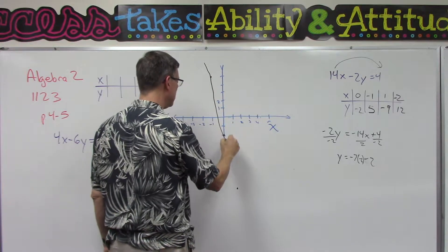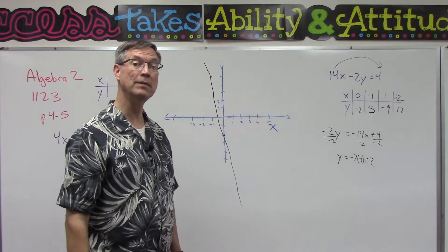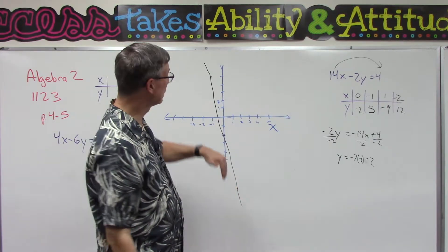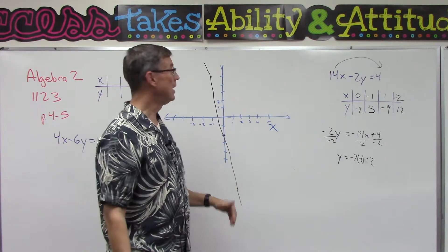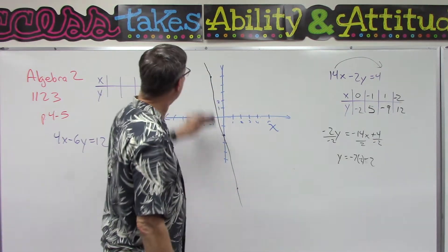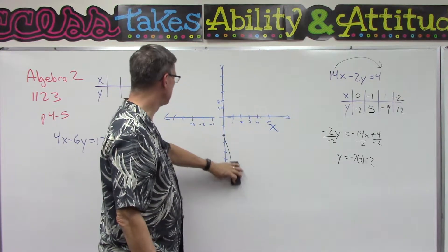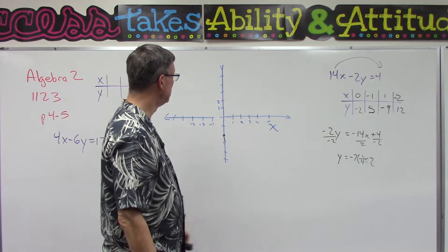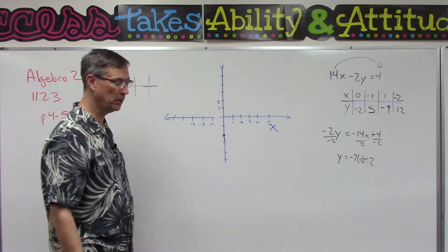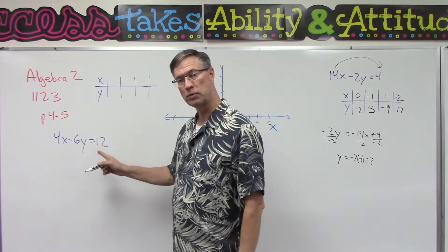Connect the dots — you should always use a ruler or straight edge. Even the edge of a 3 by 5 card will work. Connect them nice and neat and they should all line up perfectly. Alright, I'm going to erase just the line. That example was actually one from the pace. Let's take one problem from the book — I still want you to do it, but let's talk through setting it up. We have 4x minus 6y equals 12.